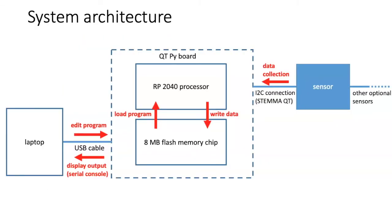This diagram shows the main parts of the Qtpy RP2040. At the heart is the RP2040 processor, which is also used in the Raspberry Pi, though here there is much less other circuitry on the board. A key piece is the 8 megabyte flash memory chip, where programs are stored and where you can also save data if you enable that. Communication between the laptop and the board is done through the USB cable, allowing you to edit programs on the memory chip and view code output through the serial console on the laptop screen.